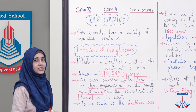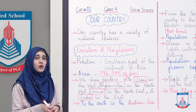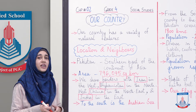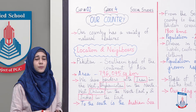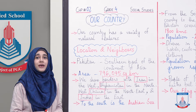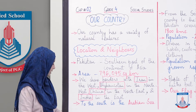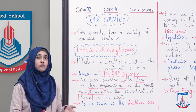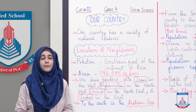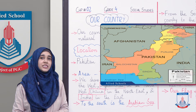Bachon ab aap ne yeh baat yaad rakhni hai ke agar aap apne mulk mein amn chahte ho, khushhaali chahte ho, toh is ke liye zaroori hota hai ke aap ke jo mulk ke humsaaye hain wahan bhi haalaat achhe hon. Jaise ordinary life mein hota hai ke agar aap ki apne humsayon ke saath achi nahi banti toh aap ke liye problems ho jaati hain, bilkul isi tarah as a country bhi yeh zaroori hai ke hamari apni humsaaya mumaalik se achi banti ho. To the south is the Arabian Sea. Aap Pakistan ka map is waqt apni screens par dekh saktey ho jis mein aap ke neighbors nazar aayenge aur saath hi Arabian Sea kis jagah par hai.